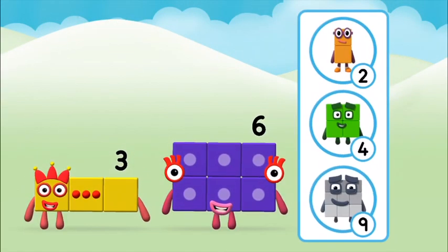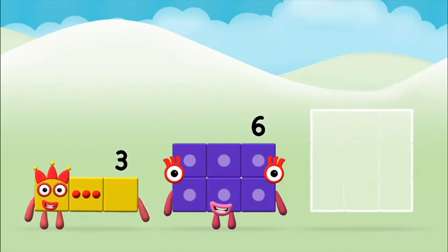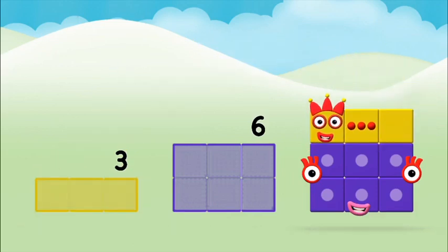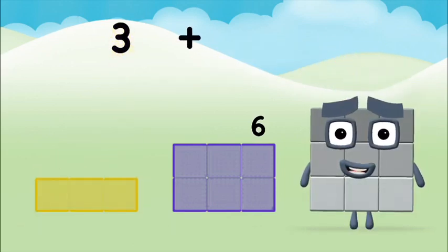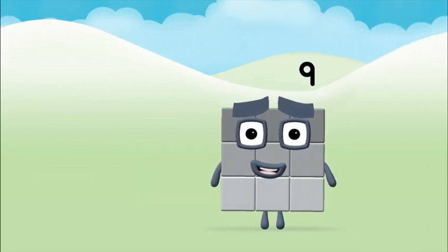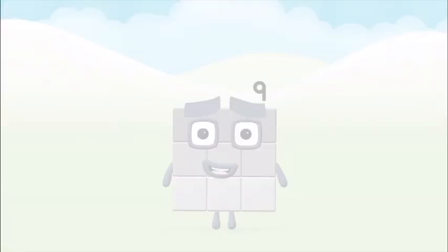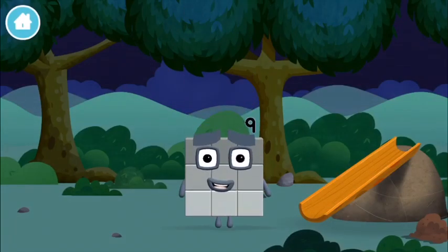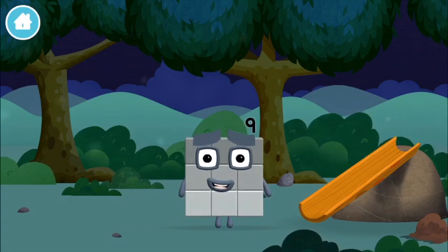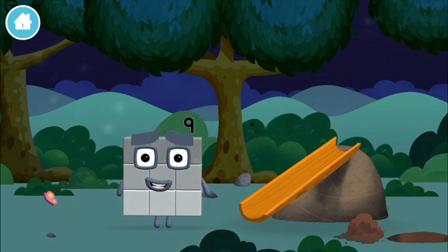What number block can you make by adding these two together? That's the correct answer. Add the number blocks together. Six. Three. Three plus six equals nine. Great! You made number block nine. You made a new number block.